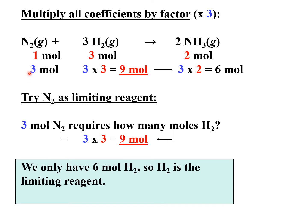Multiply all coefficients in balanced equation by this factor. Imultiply natin by three. By three. Three and three. This will be nine. Three times one is equal to three. And three times two is equal to six. Try N2 as limiting reagent. Three moles of N2 requires how many moles of H2? Three times three is equal to nine. We only have six moles of H2. Kulang siya than what is required. Six moles lang yung given. H2 is the limiting reagent.